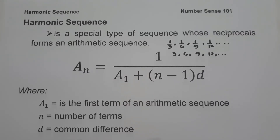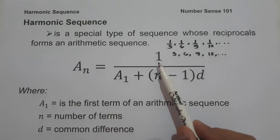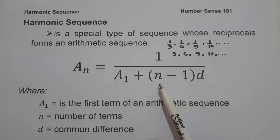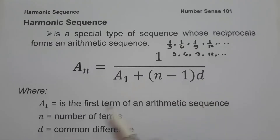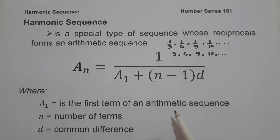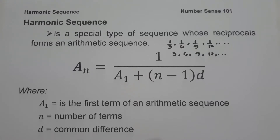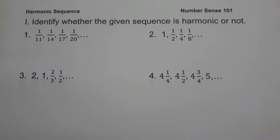Since a harmonic sequence is the reciprocal of an arithmetic sequence, we are going to use the formula: a sub n equals 1 over (a sub 1 plus quantity n minus 1 times d), where a sub 1 is the first term of the arithmetic sequence, n is the number of terms, and d is the common difference. These are the basic concepts you need to remember about harmonic sequences.